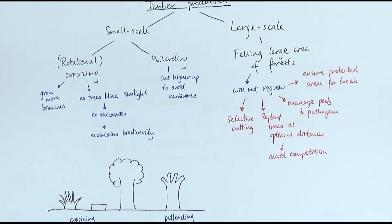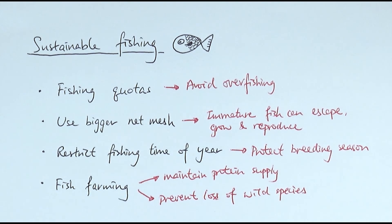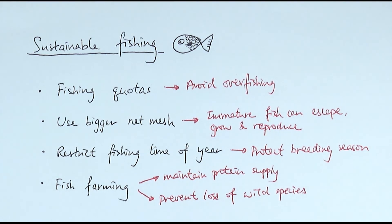Large scale timber production involves felling large forest areas, similar to deforestation by cutting or controlled burning. Trees will not regrow, so measures must be taken to protect the forests for a future timber source. For sustainable fishing, four methods are used: fishing quotas; bigger net mesh to allow smaller fish to escape; restricting fishing seasons to protect breeding periods; and fish farming, which maintains protein supply and livelihoods while preventing the loss of wild species. That is sustainability.